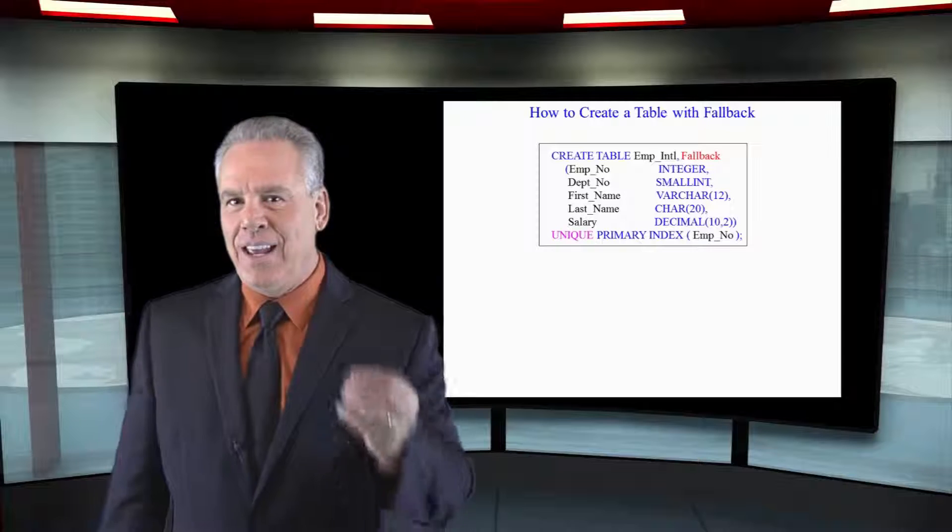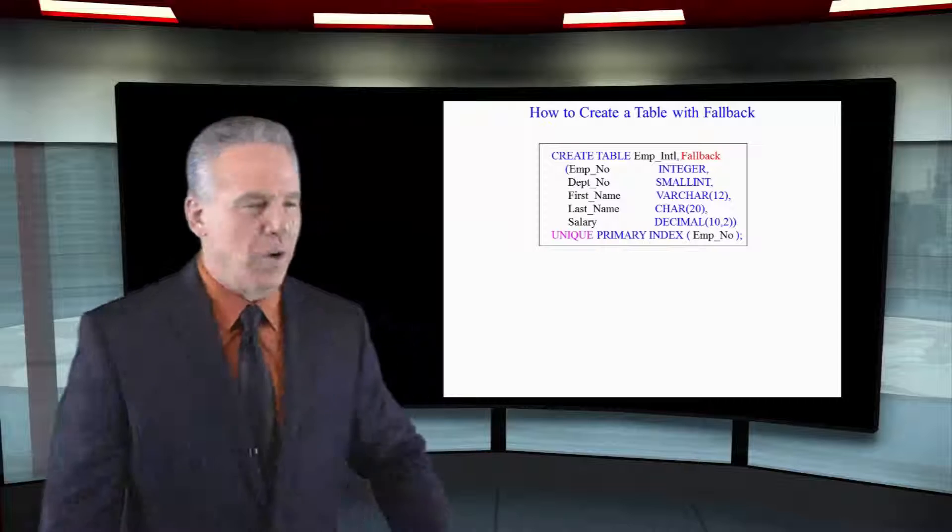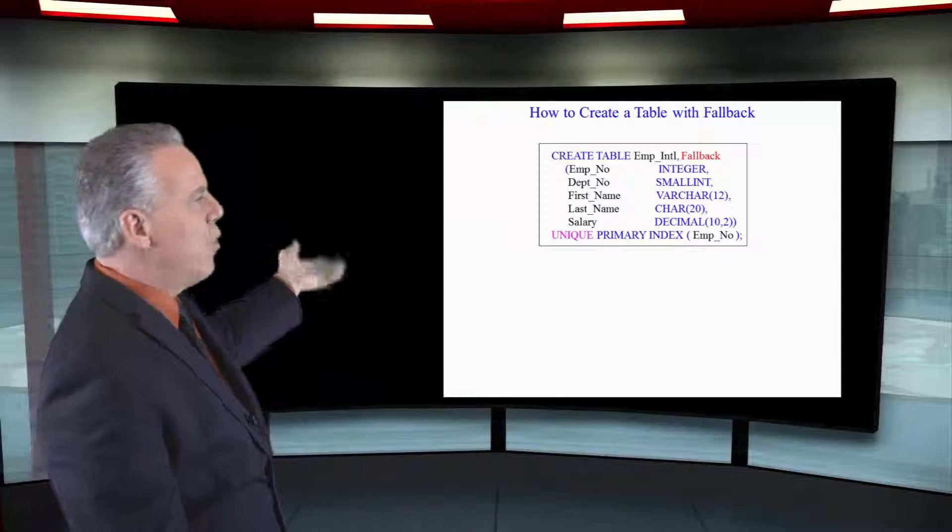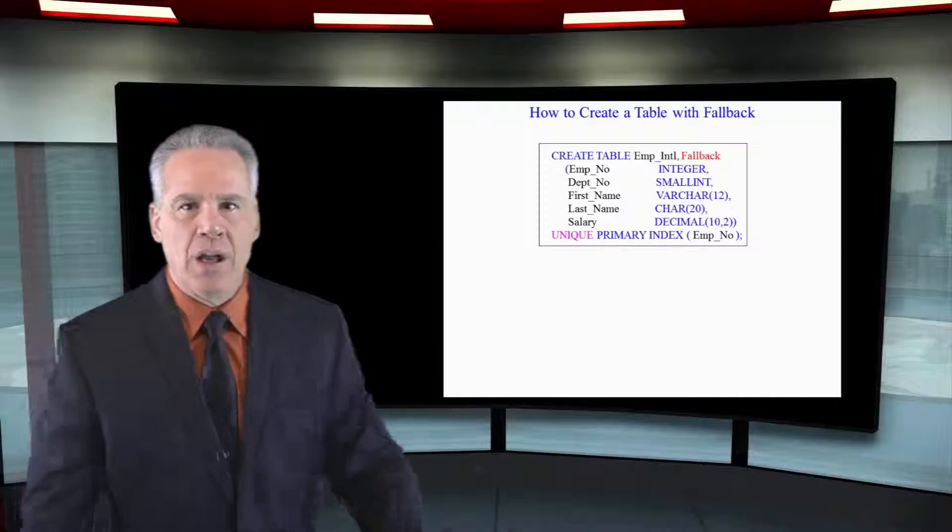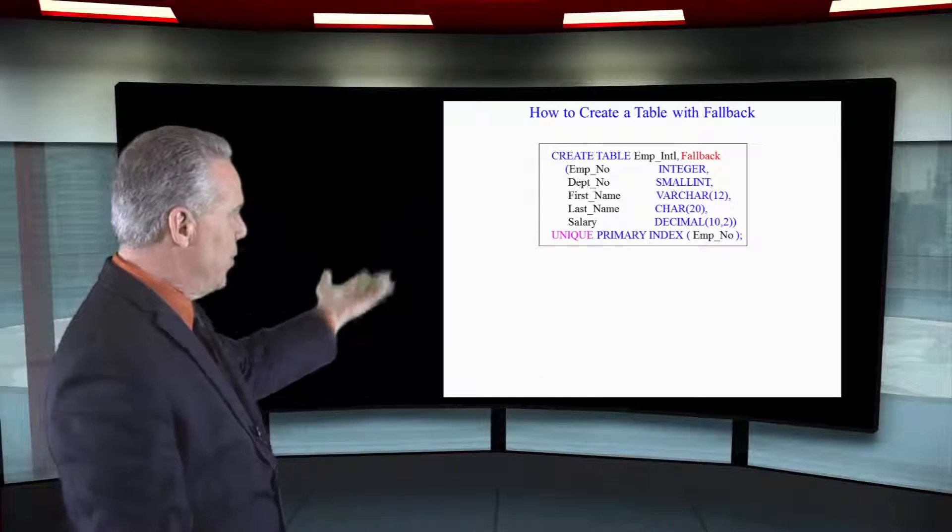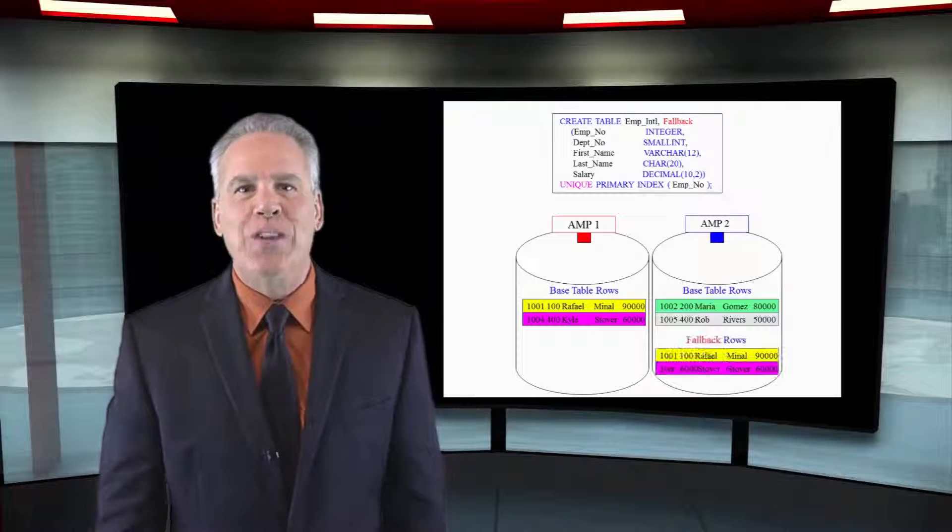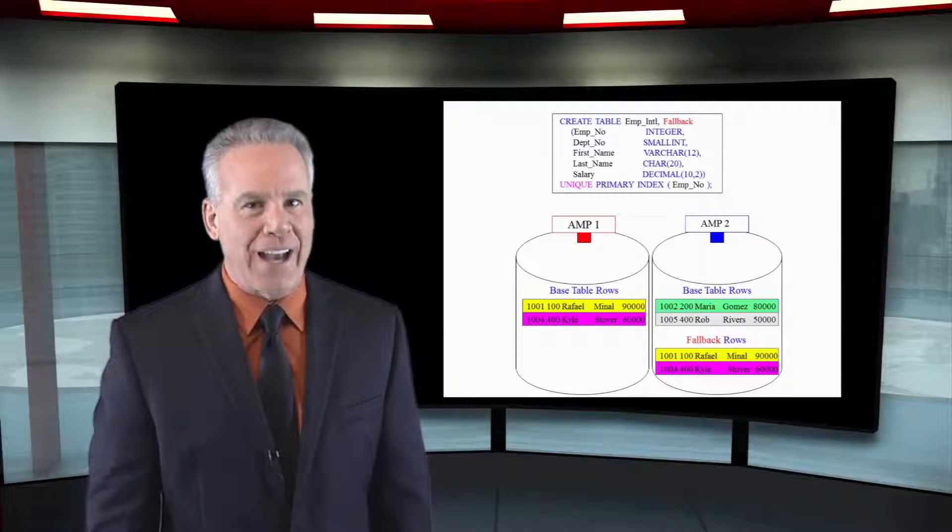Here's the CREATE statement where fallback has been implemented. I've color-coded this for you. We've got our CREATE TABLE, table name, comma, fallback, and then our columns and their data types in the primary index. If you see fallback, you know the table is fallback protected.